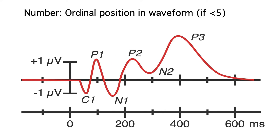In some cases, the number indicates the ordinal position in the waveform. For example, p1, p2, and p3 are the first, second, and third major positive components.